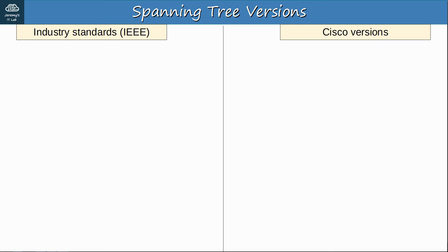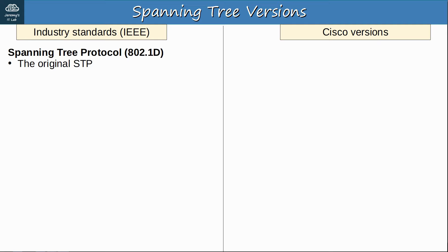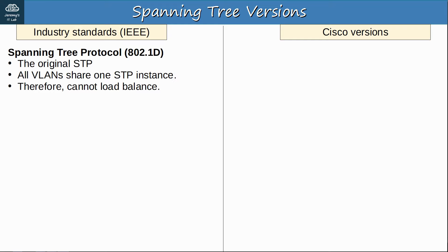Let's start by summarizing the different versions of spanning tree. On the left are the industry standard IEEE versions; on the right are the Cisco proprietary versions. First up, classic spanning tree protocol, IEEE standard 802.1d — the original spanning tree protocol, originally published in 1990, though created in 1985. In classic STP, all VLANs share one STP instance. Therefore, we cannot load balance using classic STP, because there is only one instance — we cannot block different ports in each VLAN to achieve load balancing.